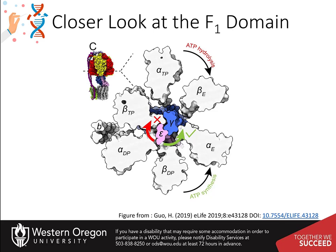Interestingly, the ATP synthase protein can work in the opposite direction. If there's a lot of ATP around, the ATP can be hydrolyzed by the ATP synthase, causing axial rotation in the clockwise direction. This would subsequently turn the C subunits clockwise as well and promote the movement of protons into the inner membrane space. This reverse mechanism is highly used in the vacuole of plants, where an ATP synthase homolog is used to pump protons across the membrane at the expense of ATP.